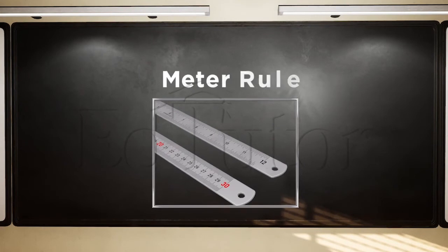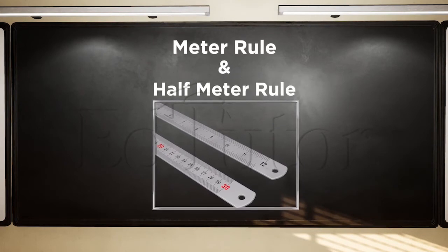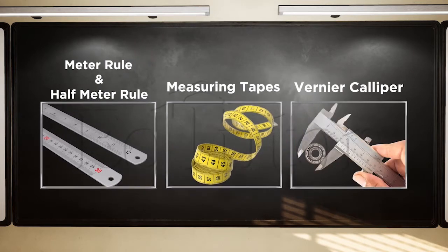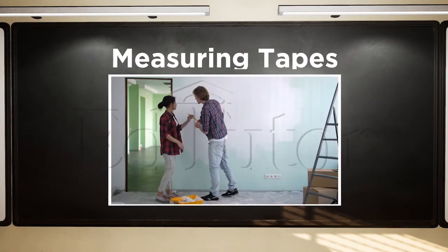Length can be measured with the meter rule, half meter rule, measuring tapes, or vernier caliper. In today's video, we will start the study of measuring instruments. Let's start with measuring tapes.